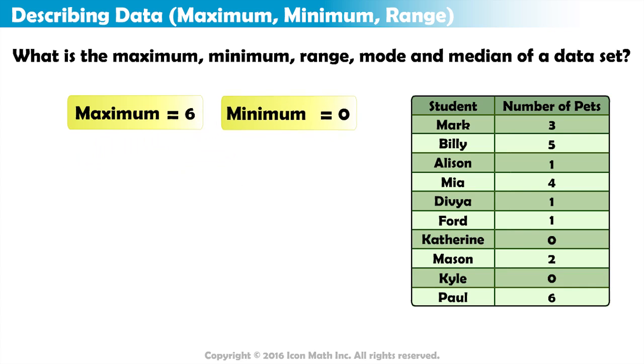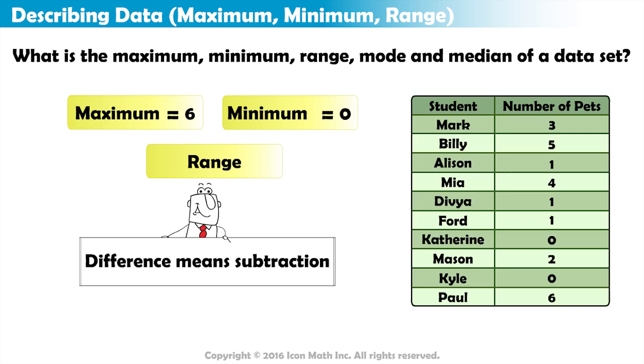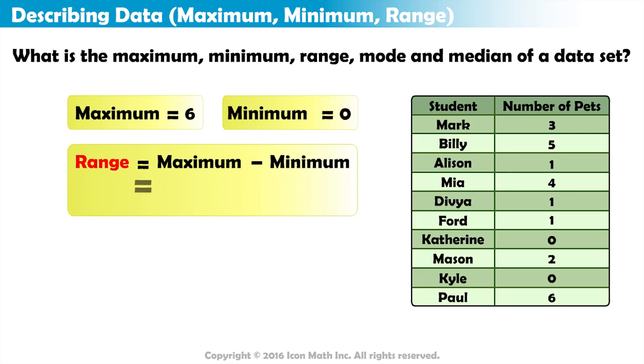Now that we've identified the maximum and the minimum, let's find the range. The range of a data set is the difference between the maximum and the minimum values. Remember, difference means subtraction. So, the range is equal to the maximum value minus the minimum value. For this data, the range is equal to 6 minus 0, or 6.